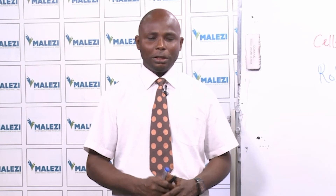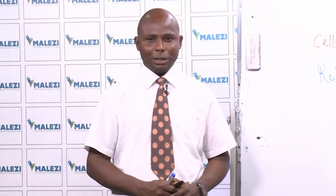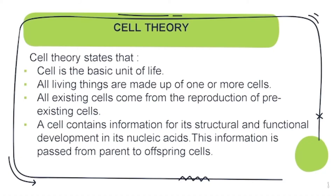To summarize the cell theory: first, cell is the basic unit of life; second, all living things are made up of one or more cells; third, all existing cells come from the reproduction of pre-existing cells; and lastly, a cell contains information for its structural and functional development in its nucleic acids, and this information is passed from generation to generation — from parents to offspring cells.